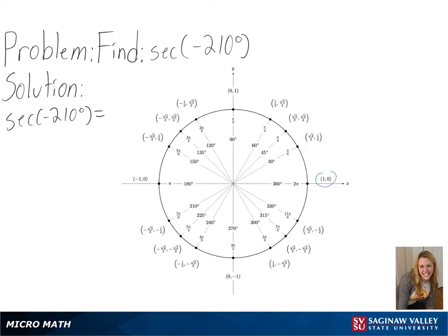So we will start at one zero and then move clockwise until we have rotated 210 degrees, which in this case is equivalent to 150 degrees.